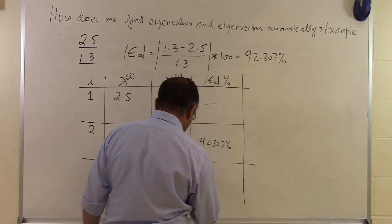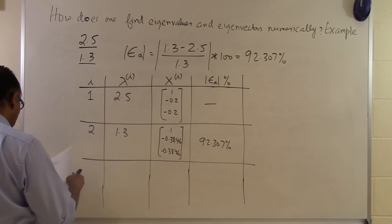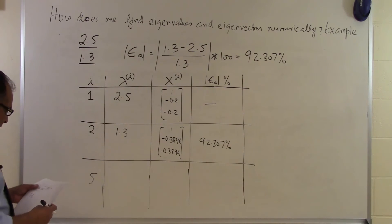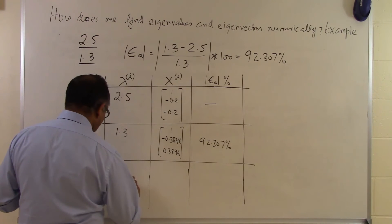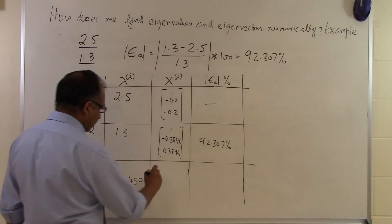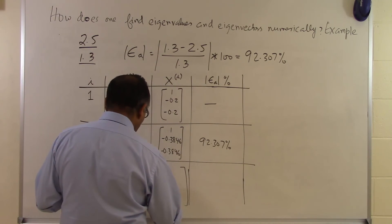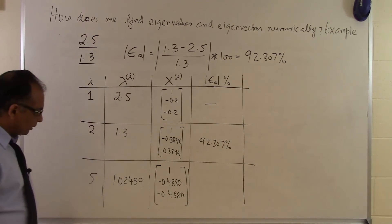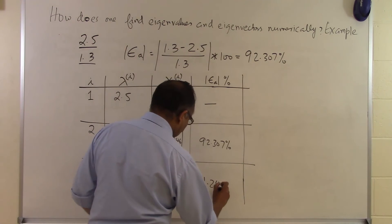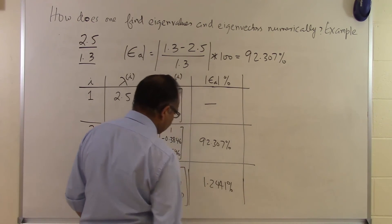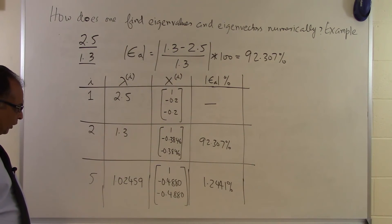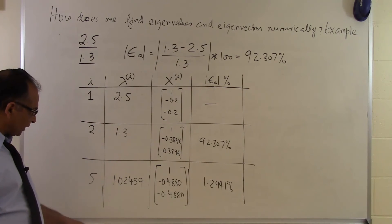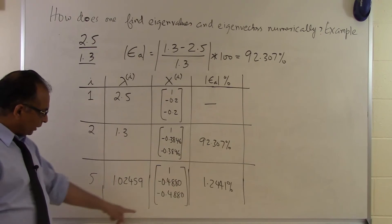Continuing the process and skipping iterations 3 and 4, by the 5th iteration we get λ = 1.02459 with eigenvector [1, -0.4880, -0.4880] and a relative approximate error of 1.2441%. If a tolerance of 2% was specified, we would stop here, reporting this as our eigenvalue and eigenvector estimates.